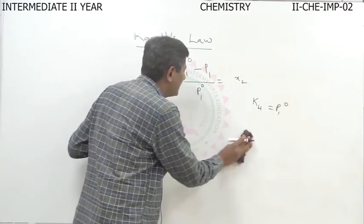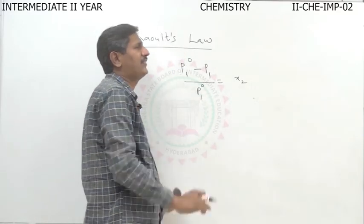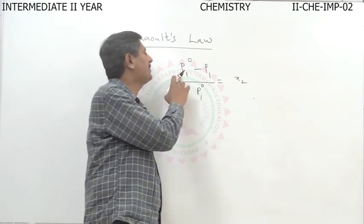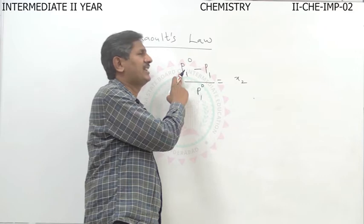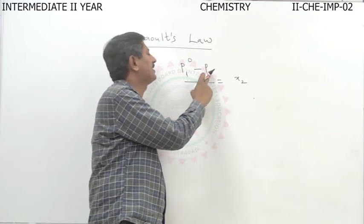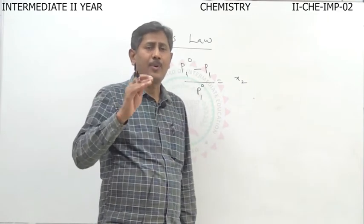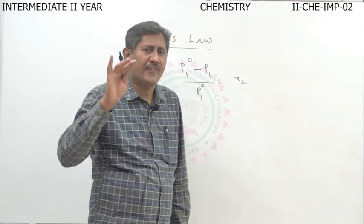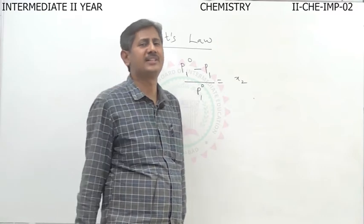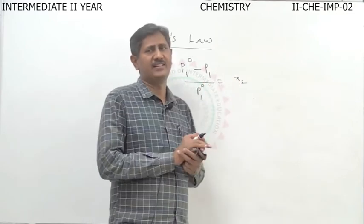In this equation, P1° is the vapor pressure of the pure solvent, and P1 is the vapor pressure of the solution. The partial vapor pressure of a component in a solution is directly proportional to its mole fraction — there are two types of definitions for Raoult's law, and both are very important for two marks.